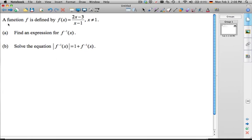We've got a question here where we have a function f defined as a rational function, 2x minus 3 over x minus 1. Obviously x can't equal 1. Why is that? Because 1 minus 1 would be 0 and you can't divide by 0. Can't divide by 0 or the world falls apart and there's all kinds of problems.